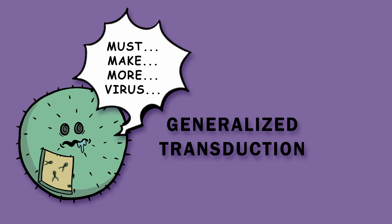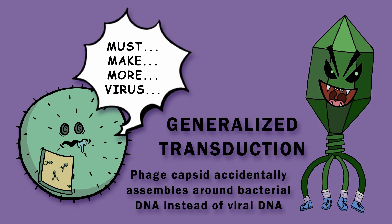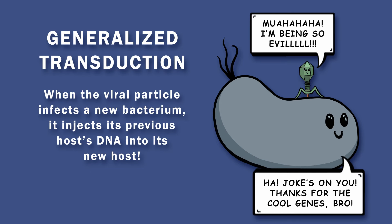There are two kinds of transduction: generalized and specialized. During generalized transduction, the phage capsid accidentally assembles around a fragment of bacterial DNA or a plasmid. When the assembled viral particle infects a new bacterium, it injects its previous host's DNA into its new host.